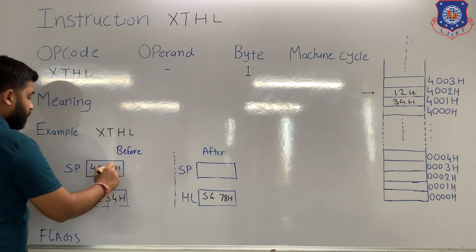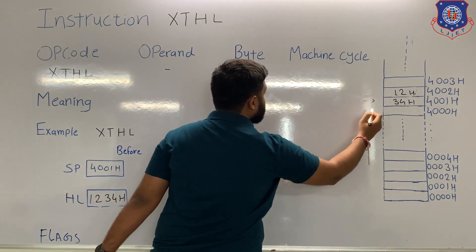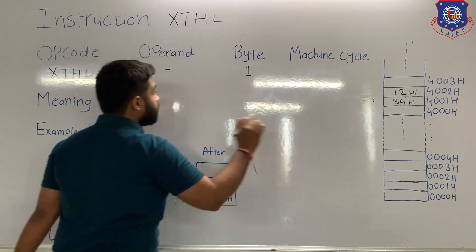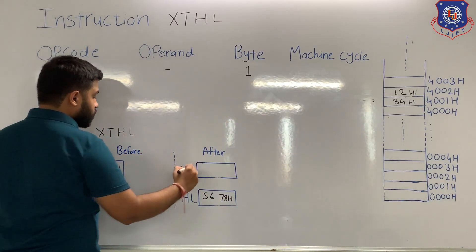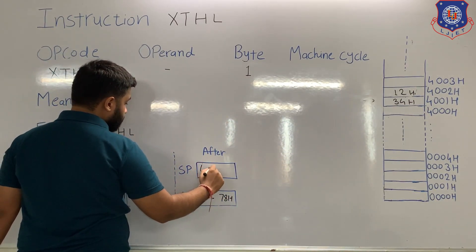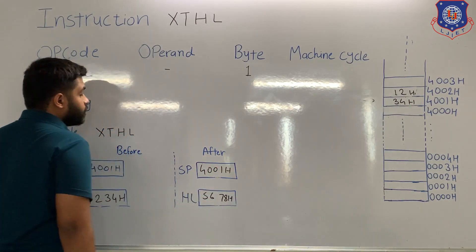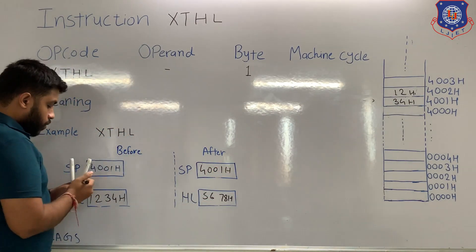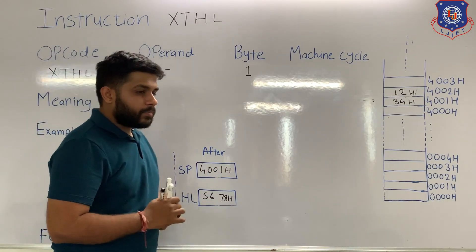After the exchange of the HL pair and the stack is done, the microprocessor will decrement the stack pointer by 1. So again the value of the stack pointer will become 4001H — it will point at the same location it was pointing before. After execution, the value of the stack pointer will remain the same, that is 4001H.